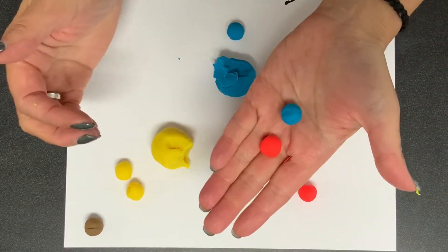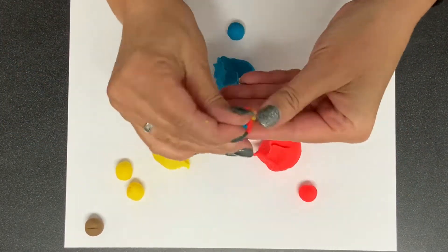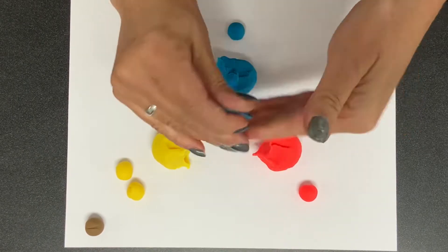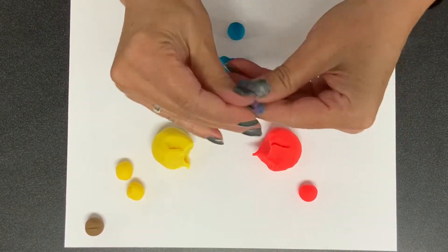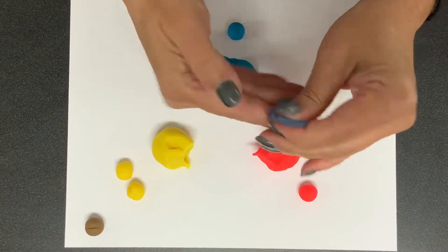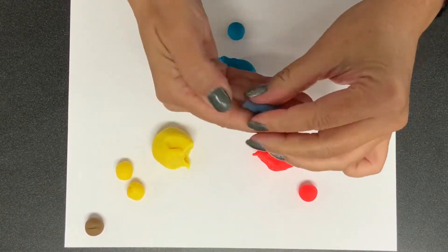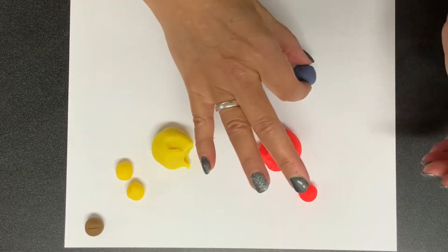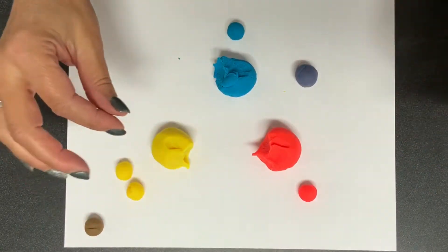Once you've got them all ready to go, you're gonna take your red and blue and you're gonna squish those together and then keep kneading and working that dough until you create violet. So red and blue make violet and as you can see it is transforming before your eyes.